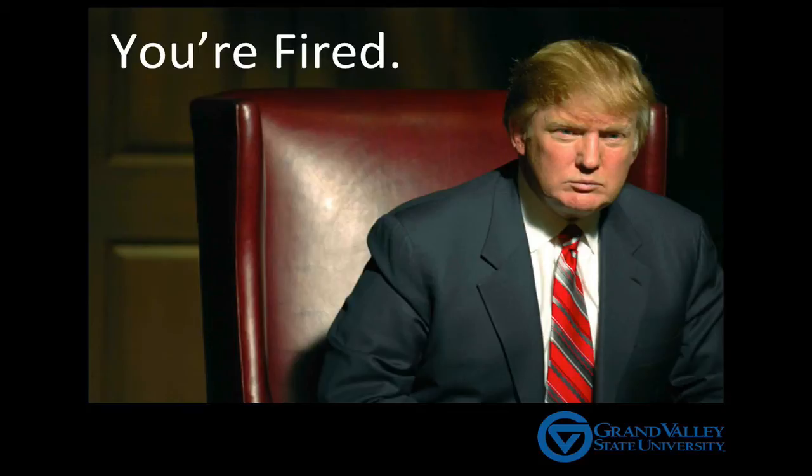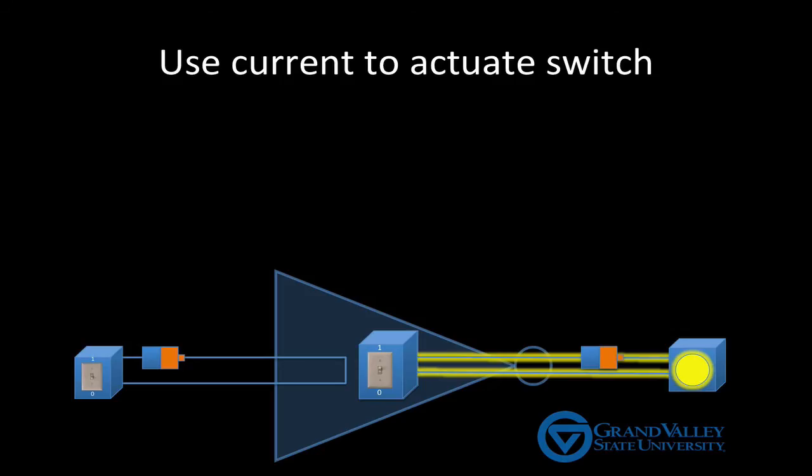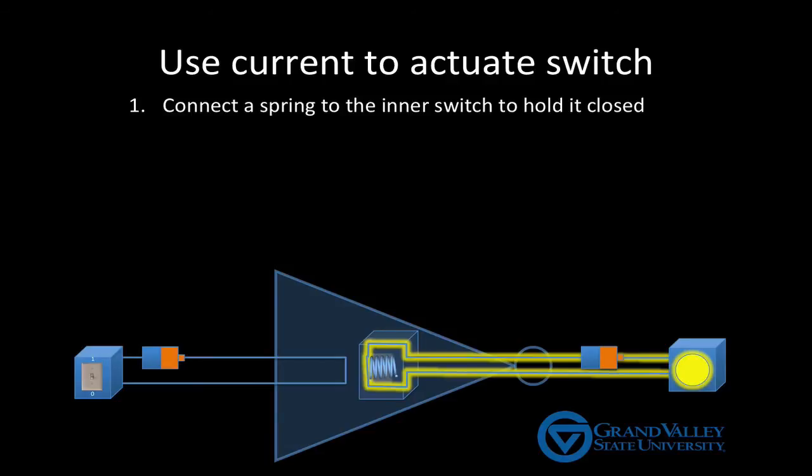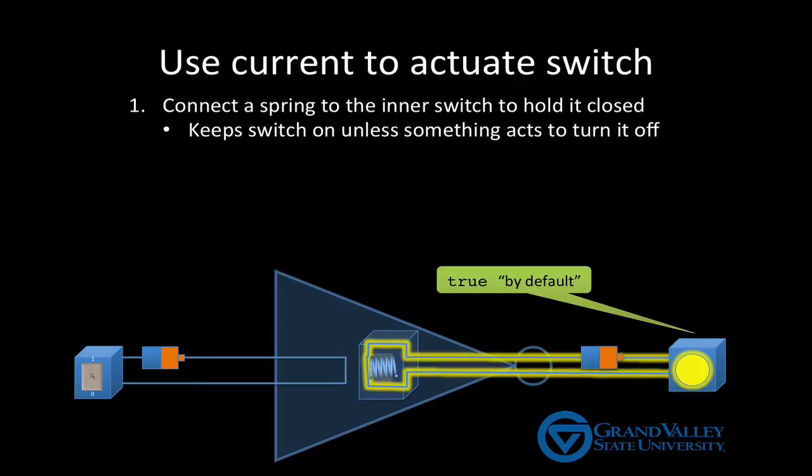Here's how we use springs and electromagnets to build a NOT gate. First, connect the spring to the inner switch in such a way that it holds the switch closed. This means the switch is always on unless something acts to turn it off. Or, another way of saying this is at this point our NOT gate is true by default. It's going to have a true output unless we take a specific action to make that output false.